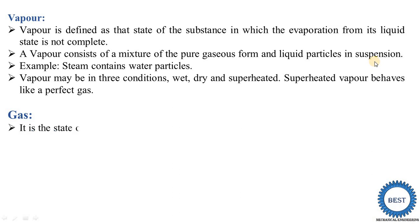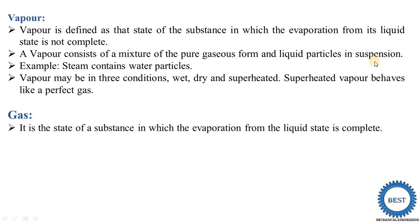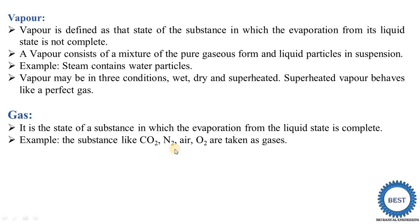The second term is gas. It is the state of a substance — also a state of substance as we discussed earlier, with three states: liquid, gas, and solid. Gas is the one state of the substance in which the evaporation from the liquid state is complete — meaning they are completely evaporated, meaning there are no liquid particles. That is why it is called gas. Examples of gas are substances like CO2, N2, air, and O2.